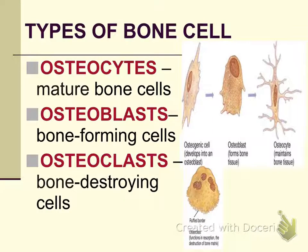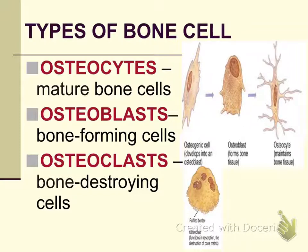There are three types of cells involved in bone growth and appositional growth. First, osteocytes are your mature bone cells. Osteoblasts — think of the letter B for building — their job is to form bone. Osteoclasts — think of the letter C for cutting — are bone-destroying cells. So osteoblast with B builds bone, and osteoclast with C cuts down bone.